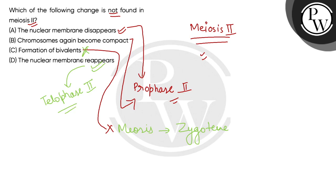Our correct option will be option C because we asked about incorrect regarding meiosis. In meiosis 2, you will not see formation of bivalent.